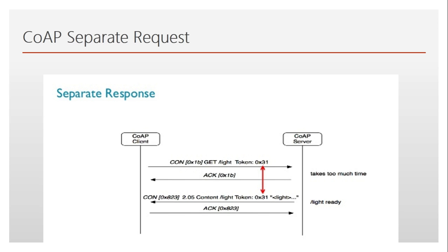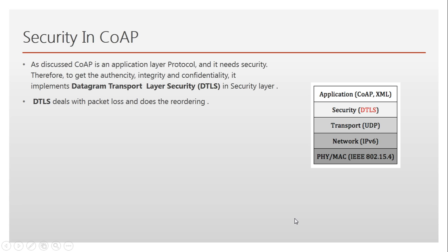In a delayed response scenario, the client makes a request using a CON message, but the server is still adjusting the light and cannot respond immediately. So it responds with an empty ACK. When the server has finished adjusting the light, it then initiates a new CON message from its end and waits for an ACK from the client.